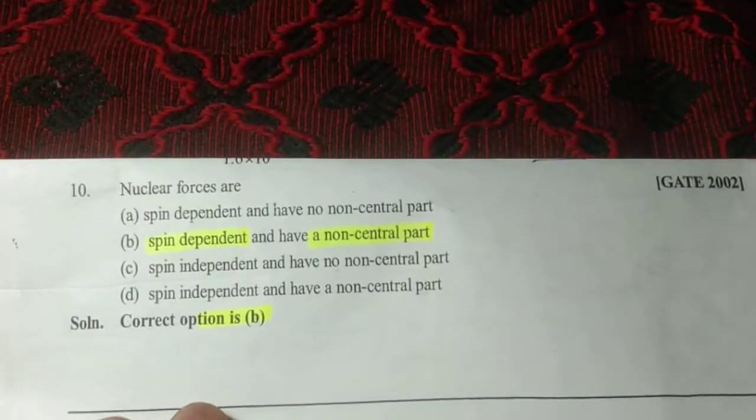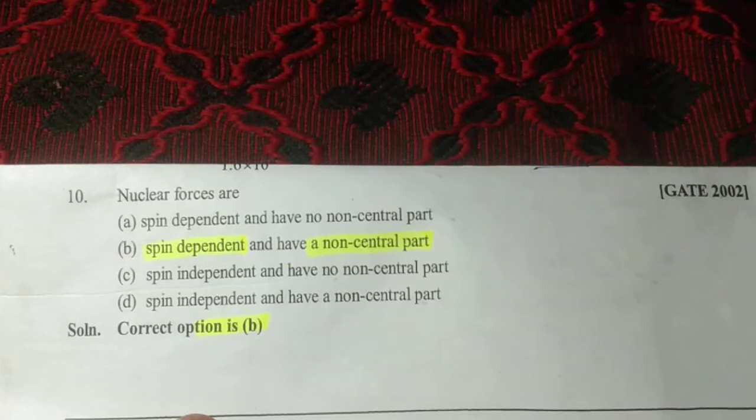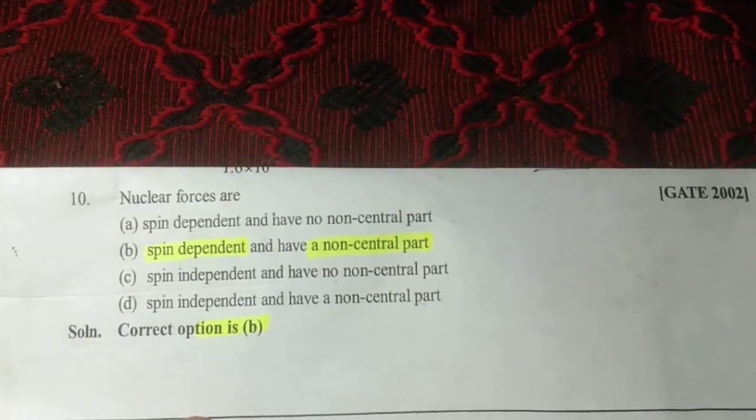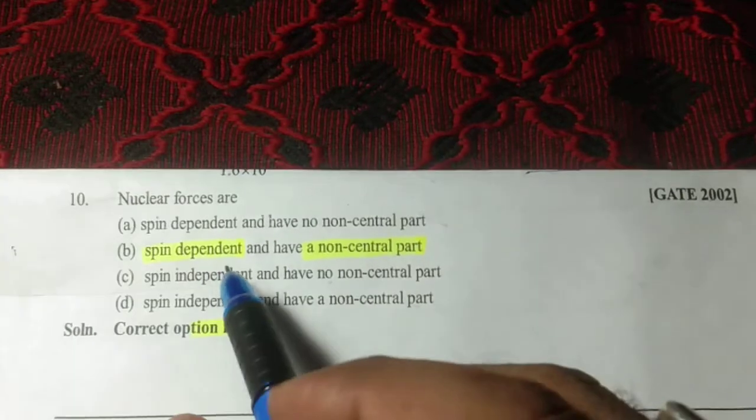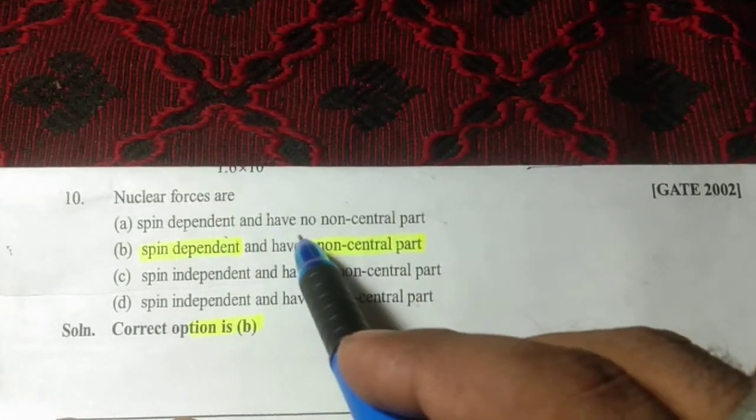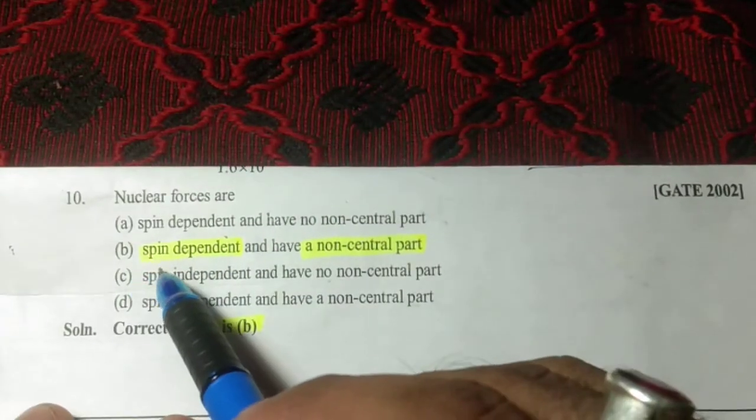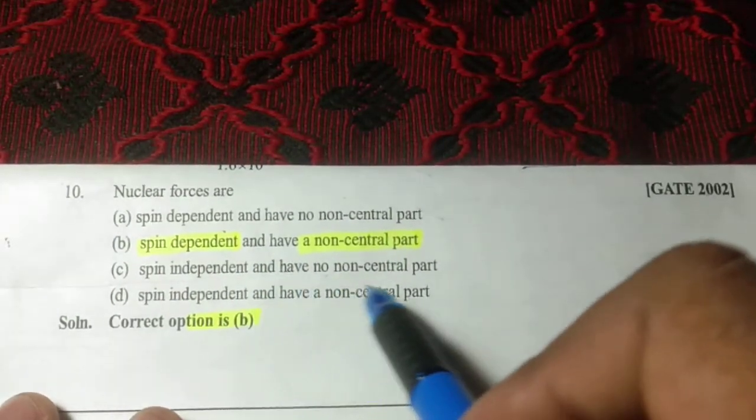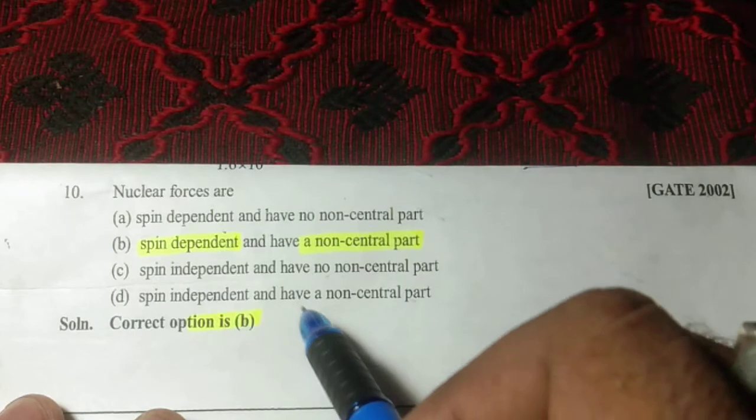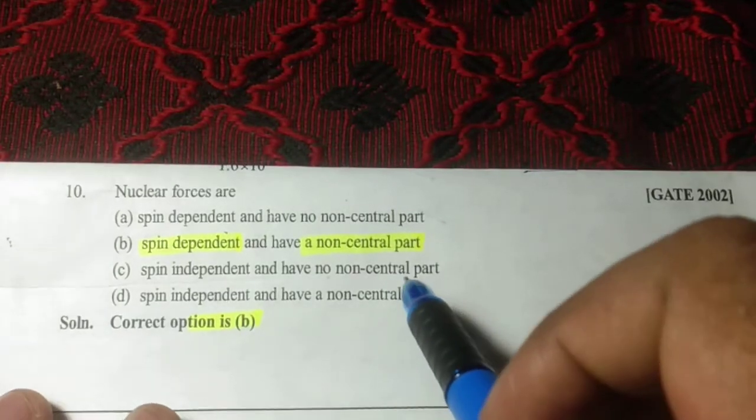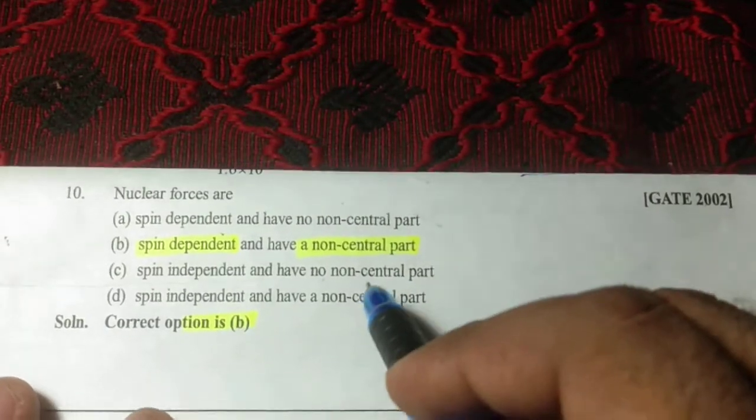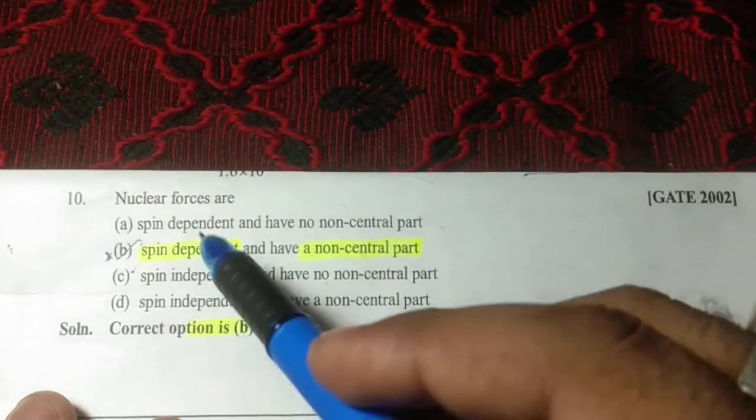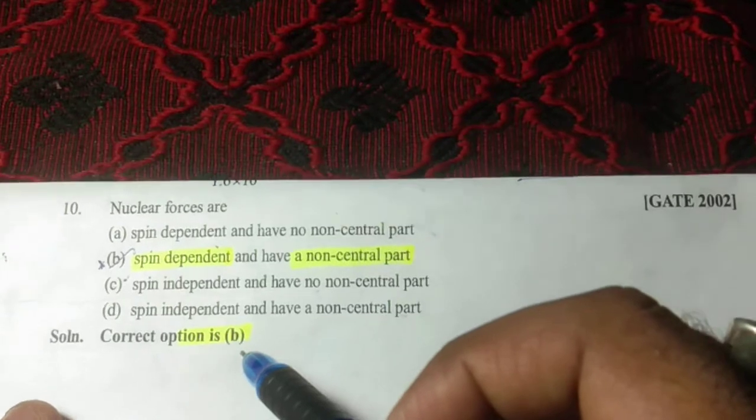Now the next question, which was asked in the GATE 2002 exam: Nuclear forces are (a) spin dependent and have no central part, (b) spin dependent and have a central part, (c) spin independent and have no central part, or (d) spin independent and have a non-central part. This is a theoretical question, and the correct option is B.